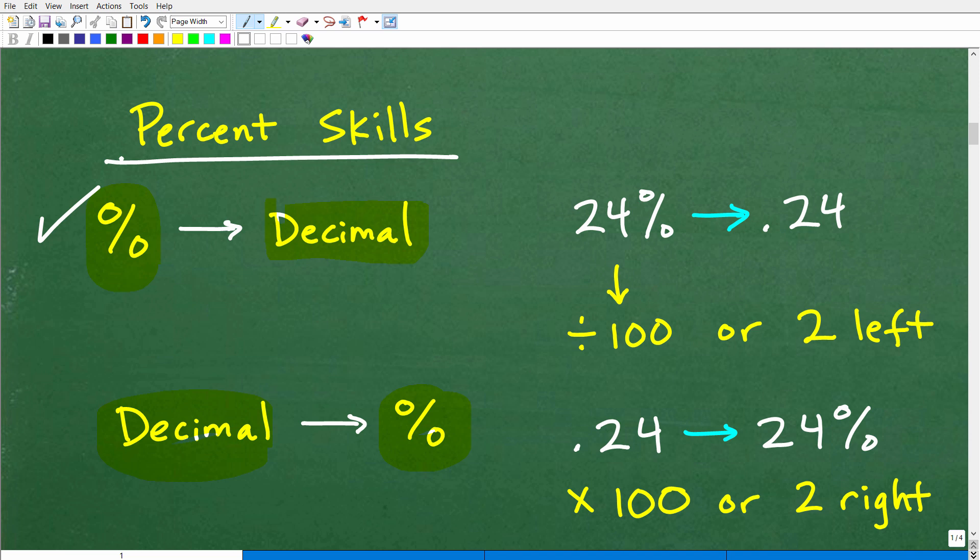So let's talk about this first skill. Let's say we wanted to write 24% as a decimal. Well, what's the definition of percent? Remember, it's a fraction that the denominator is 100. So I can write this 24% as 24 over 100. So effectively what you're doing is just dividing that number by 100. So we want to change a percent to a decimal, just divide by 100. But really, when you divide anything by 100, all you're doing is moving the decimal point two places to the left. So let's take a look at this here. 24.0%. If I want to divide this by 100 to change this into a decimal, the decimal point goes two places to the left. And you end up with 0.24.